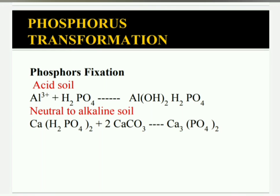Phosphorus fixation: In acid soil, H2PO4 (primary orthophosphate ion) reacts with aluminum and forms aluminum hydroxyphosphate, which is not available to plants. In neutral, alkaline, and calcareous soil, soluble calcium ions are predominant, so calcium carbonate combines with primary orthophosphate to react with calcium carbonate and form tricalcium phosphate, which is also unavailable to plants.